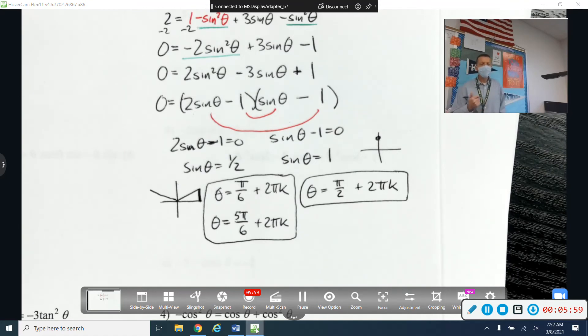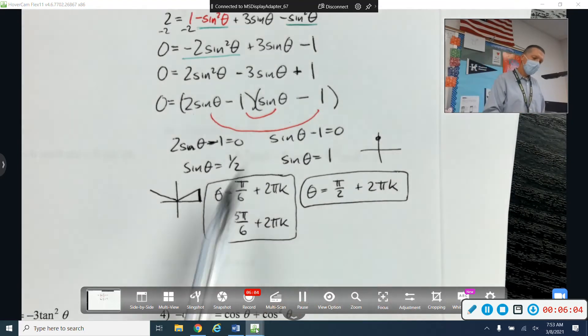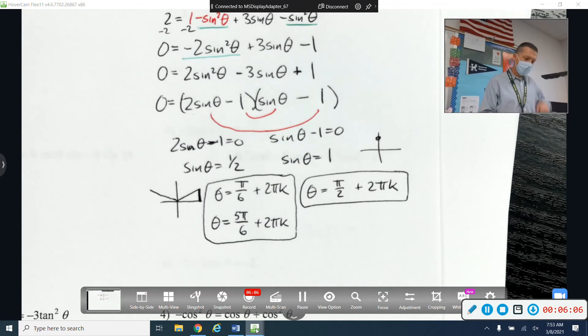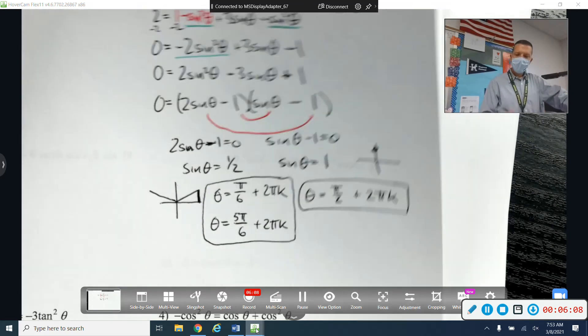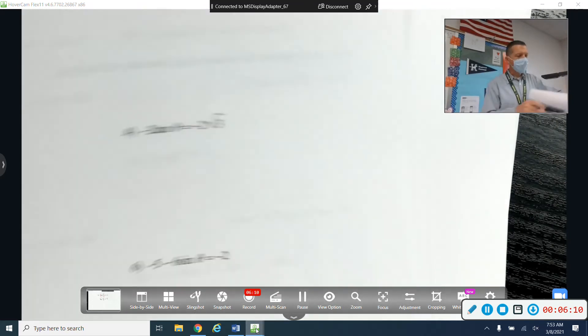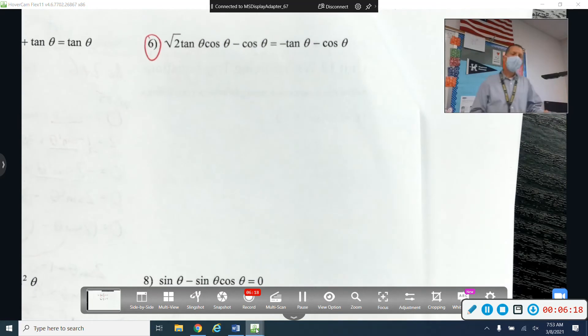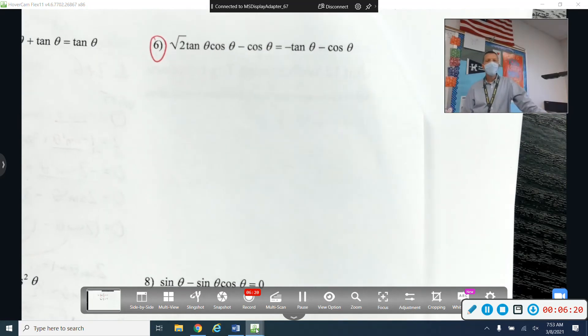And so there's our three sets of answers to that problem. So that one had factoring. It had substitution. It had the sine rule. A lot of stuff going on in number two. Let's look at number six. It looks bad.